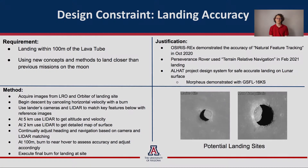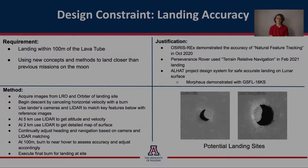The mission requires that we land within 100 meters of the skylight. To achieve this, we will use a method where we compare points on the ground from images and lidar to reference images from orbit. This strategy was also used by the OSIRIS-REx mission, the Perseverance rover, and the LHAP project.